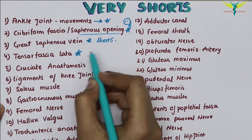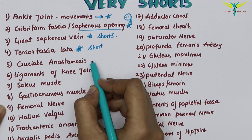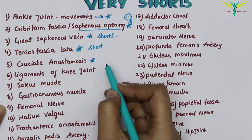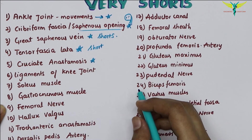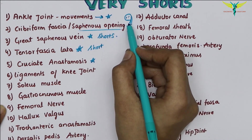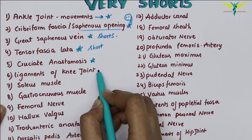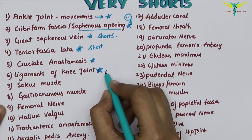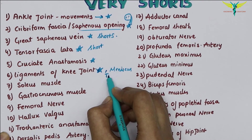The tensor fasciae latae is very important and can be a short question. The cruciate anastomosis is very important for very shorts — no need for a diagram, but simple diagrams can help gain full marks. The ligaments of the knee joint are very important, including the meniscus, the tibial collateral ligament, and the fibular collateral ligament.